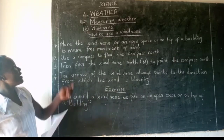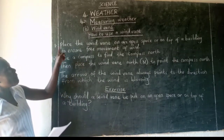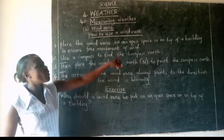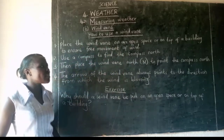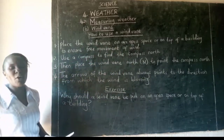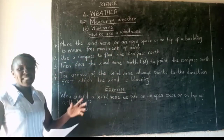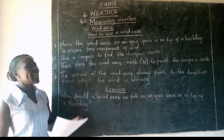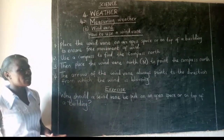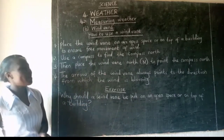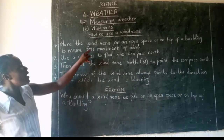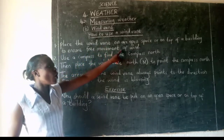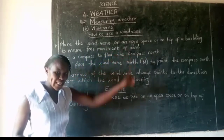So to use a wind vane, number one: place the wind vane on an open space or on top of a building. Why should it be placed in an open space or on top of a building? To ensure free movement of wind.